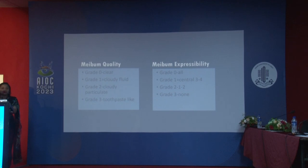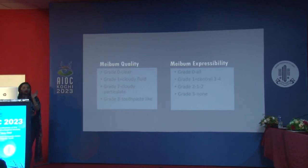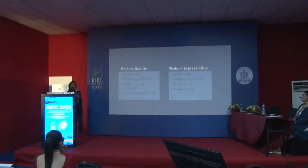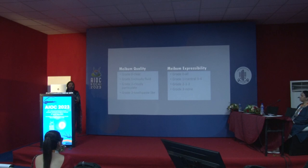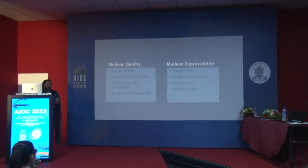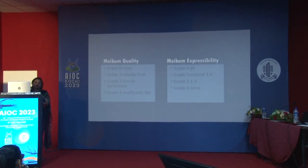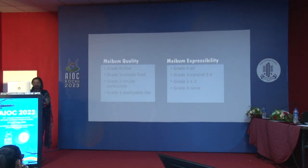Next is expressibility, assessed from the central part of the lower lid — we take the central five openings of the meibomian gland. Grade zero is when all five are well expressed; grade one is when only three or four openings are expressed; grade two is when only one or two express; and grade three is when none of them express, meaning all are blocked.